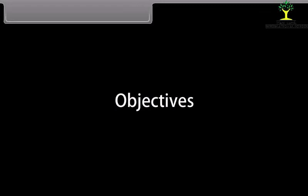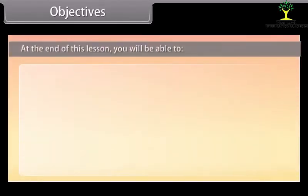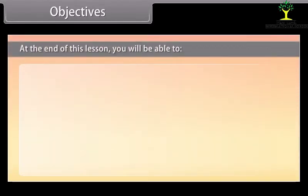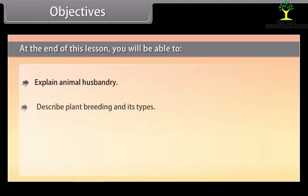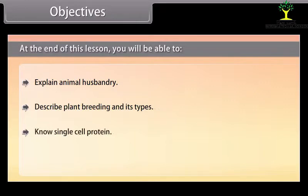Objectives. At the end of this lesson, you will be able to: explain animal husbandry, describe plant breeding and its types, know single cell protein, and explain tissue culture.